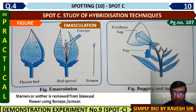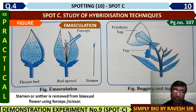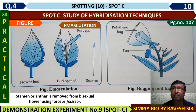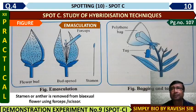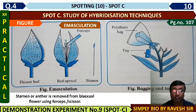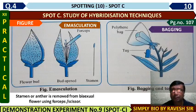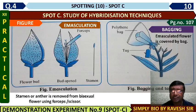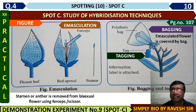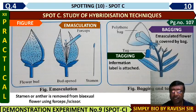If flowers are very small or tiny and in bunches, the forcep or scissor method cannot be used. Instead, hot or cold water treatment or alcohol treatment is done. After emasculation, the flower must be protected so that no unwanted or undesirable pollen reaches it. That protection process is called tagging — in simple terms.